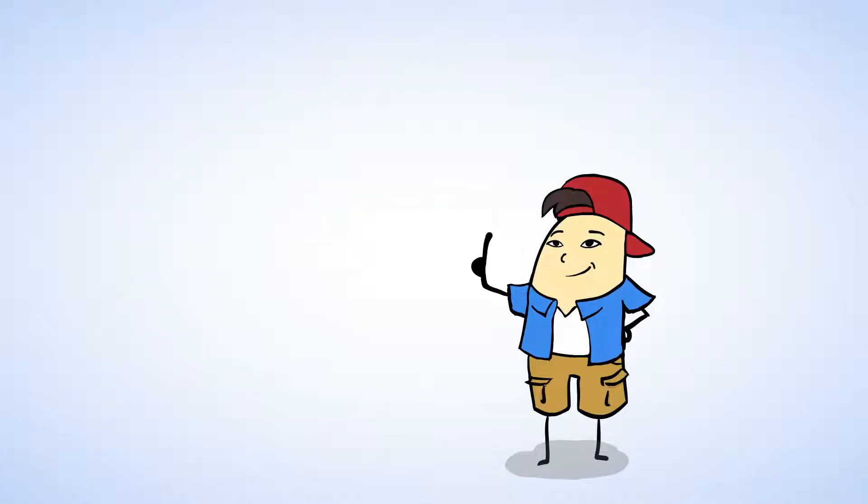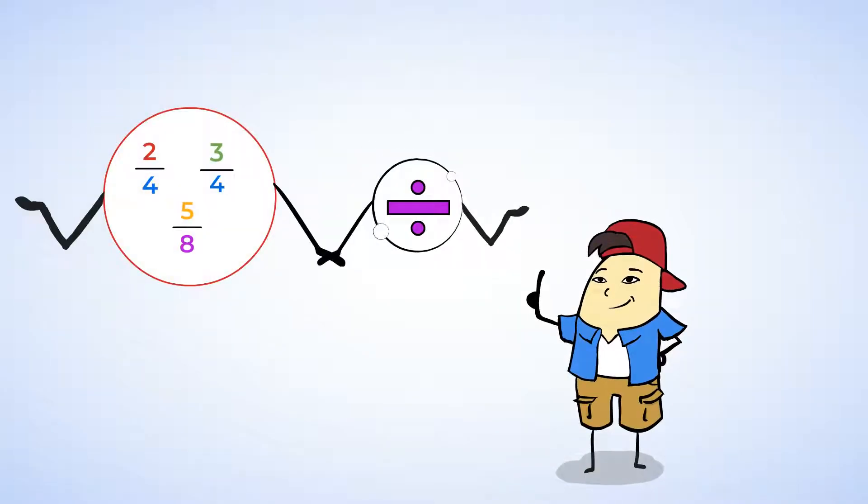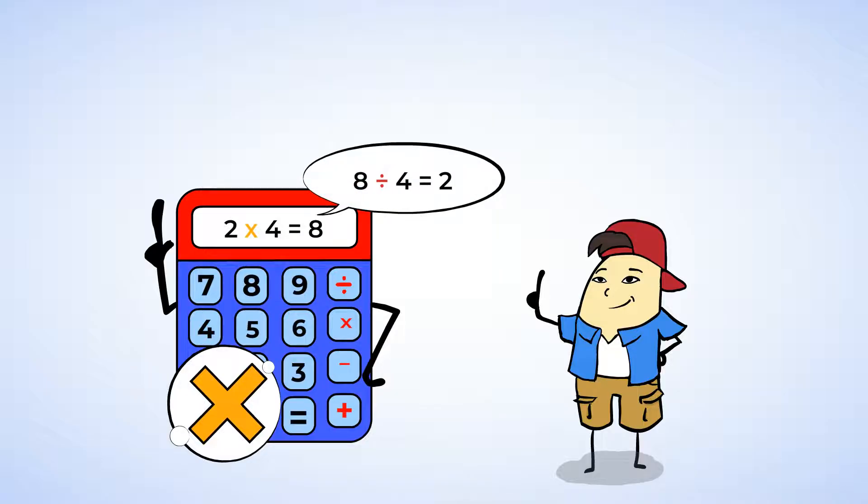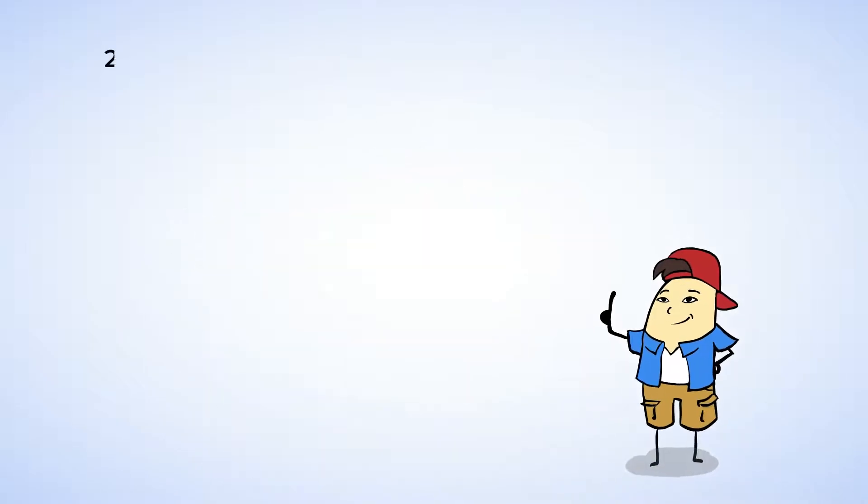You know, all this talk about the relationship between division and fractions got me thinking. We could also take a look at the relationship between multiplication and fractions. We can start by looking at multiplication and division of whole numbers. Now we know that if we have a multiplication problem, we can also write it as a division problem. For example, two multiplied by three equals six.